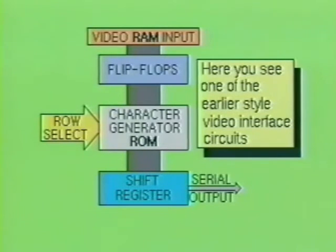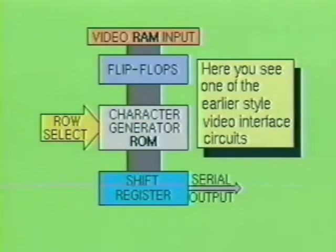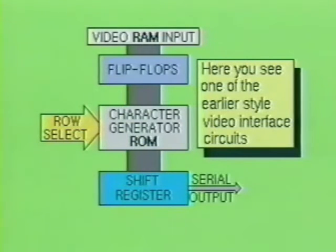The typical computer system will have a portion of its RAM set aside to store the characters which will appear on the monitor screen. This section is referred to as the video RAM, and in earlier models this section was typically 512 bytes. With larger modern computers, the demand for video RAM space has greatly increased.